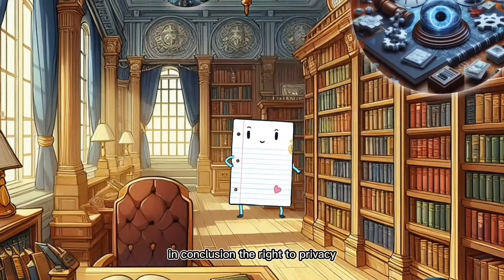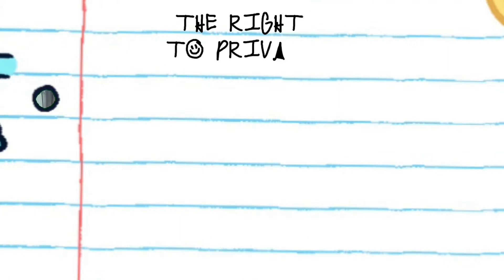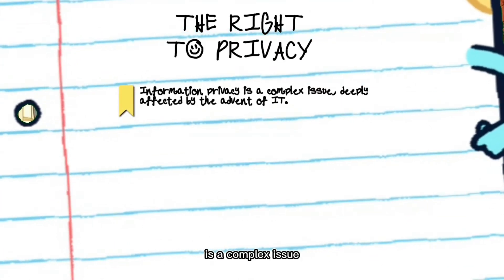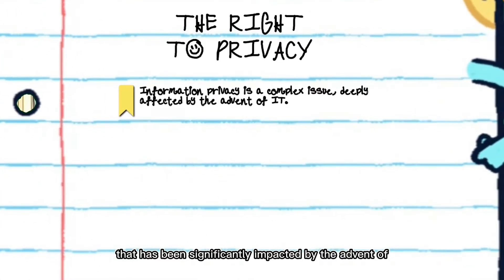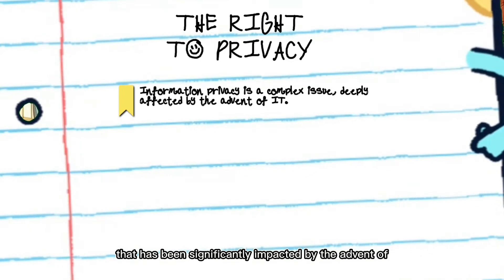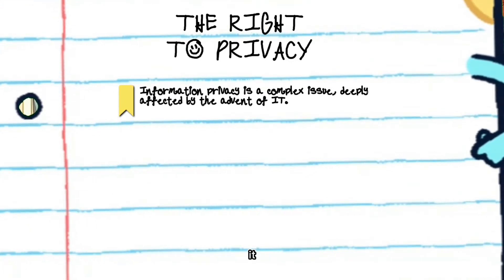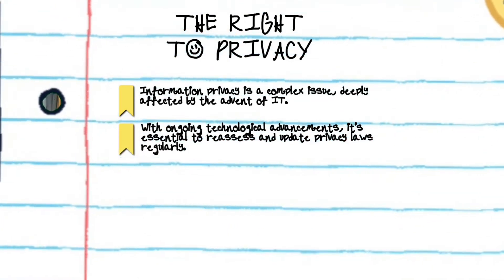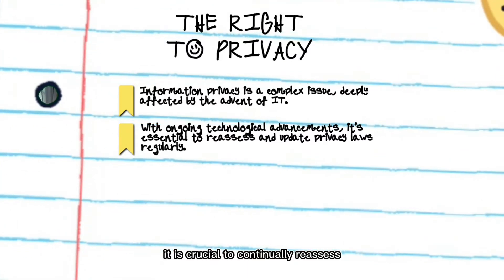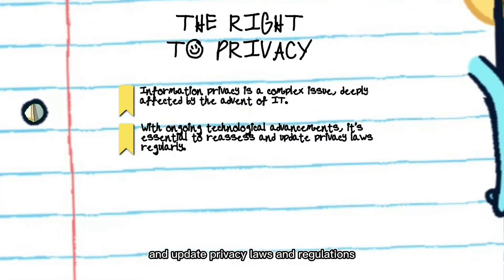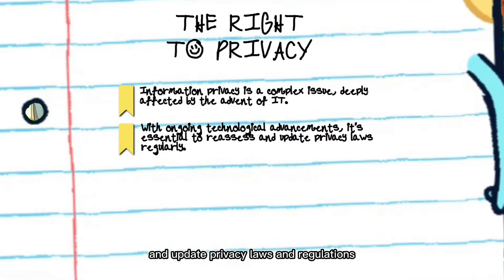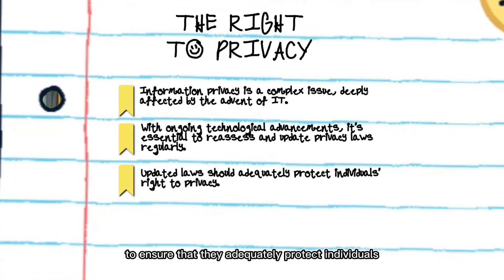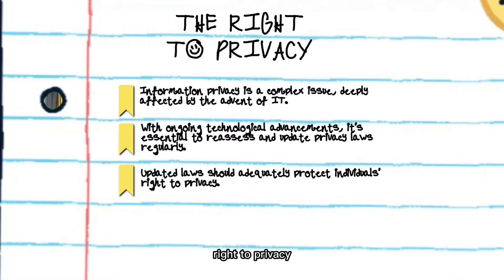In conclusion, the right to privacy, particularly information privacy, is a complex issue that has been significantly impacted by the advent of IT. As technology continues to advance, it is crucial to continually reassess and update privacy laws and regulations to ensure that they adequately protect individuals' right to privacy.